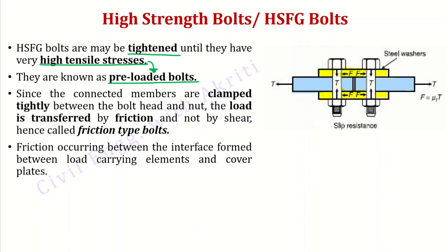When you clamp tightly between the bolt head and nut, tension is produced. The force is transferred through friction — that is why they are friction type bolts. Friction occurs between the interface formed between the load-carrying elements and the cover plates. The friction at this interface must be overcome to cause slip. Overcoming friction means the bolt will slip.